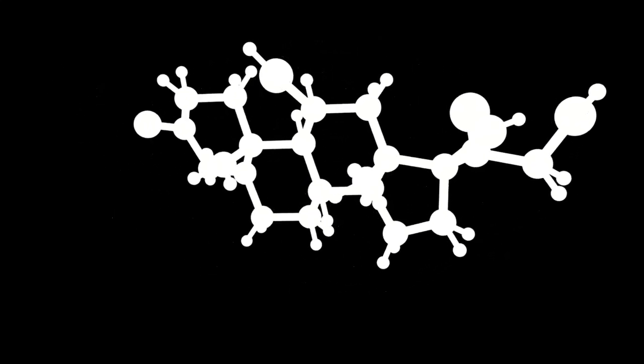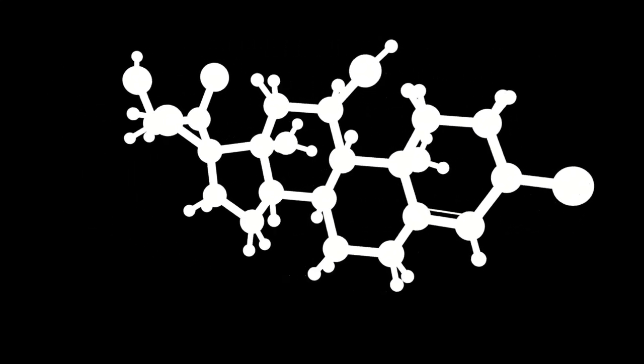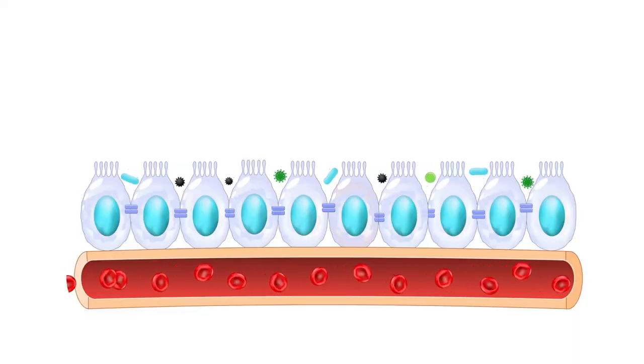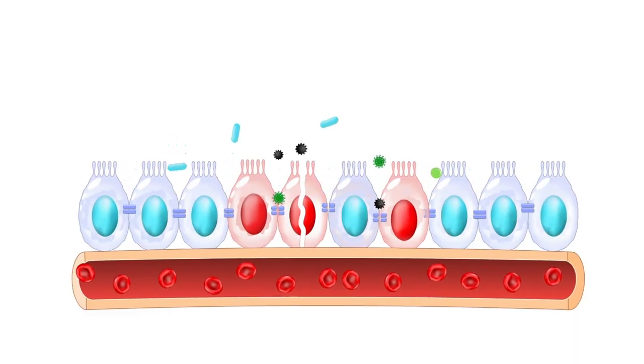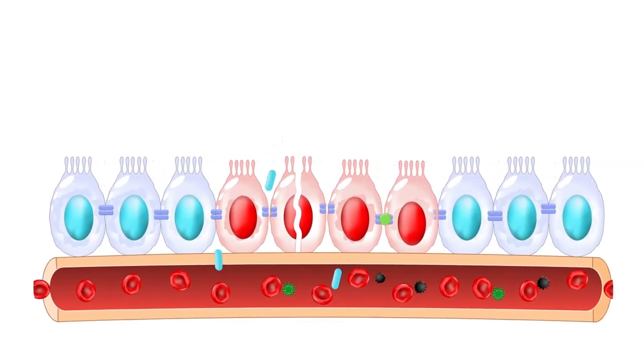When stress becomes chronic, this barrier can be compromised, leading to the so-called leaky gut syndrome. In this condition, the junctions between the cells of the intestinal barrier become loose, allowing unwanted particles to pass into the bloodstream. This can trigger an inflammatory response throughout the body, contributing to a range of inflammatory and autoimmune conditions.